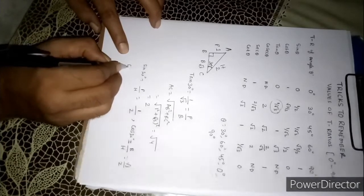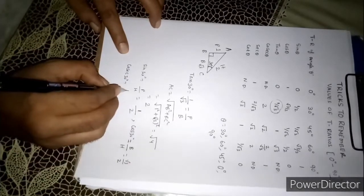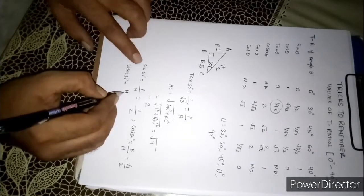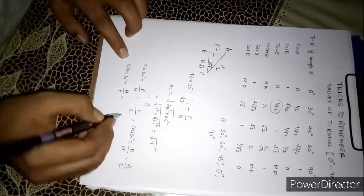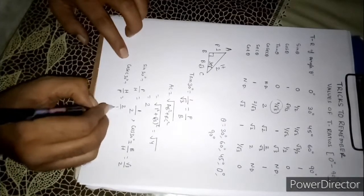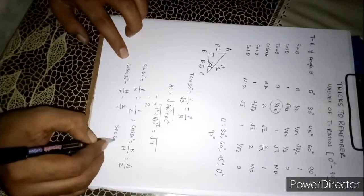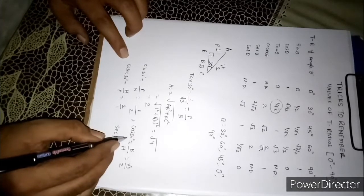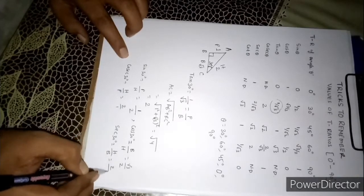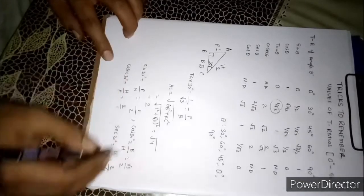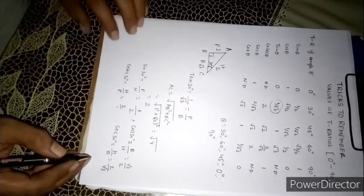If you want to know cosec 30, cosec 30 is what? Reciprocal of sin means hypotenuse by perpendicular that is 2 by 1. Similarly we can get sec 30, it is the reciprocal of cos 30 means H by B that is 2 by root 3. So in this way I can get other values.